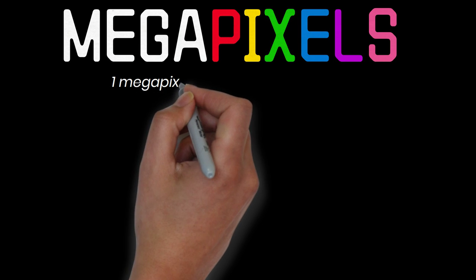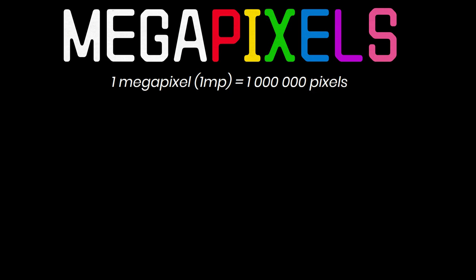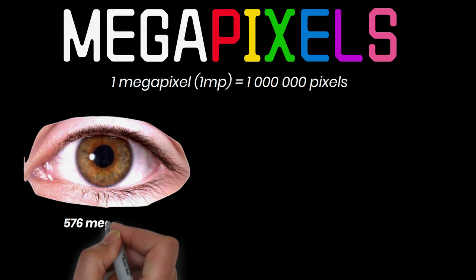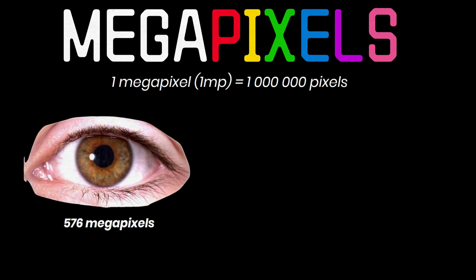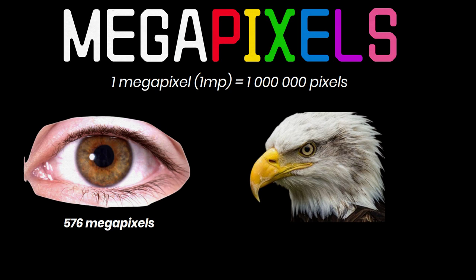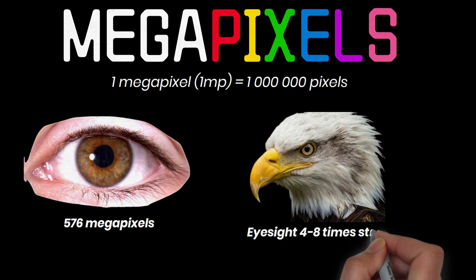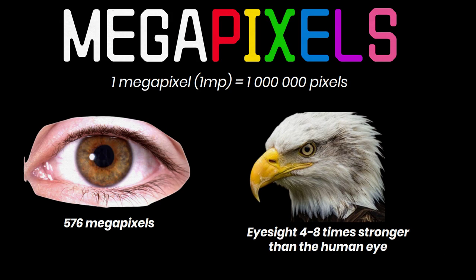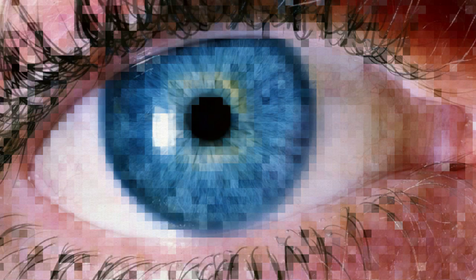Have you ever heard of megapixels? One megapixel is equal to a million pixels. The more pixels, the better the picture. The human eye has a resolution of 576 megapixels. The eagle's eye is one of the strongest in the animal kingdom, and it has been estimated that their average eyesight is four to eight times higher than the human eye. That is a lot of megapixels. Pixels might be small, but if you have enough of them, they can show amazing things.